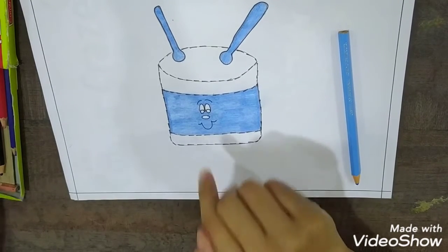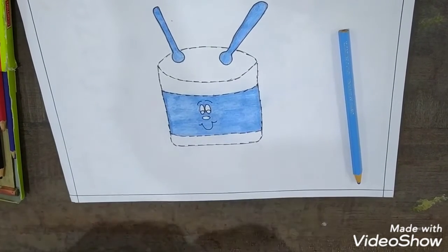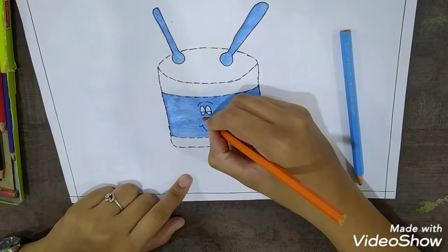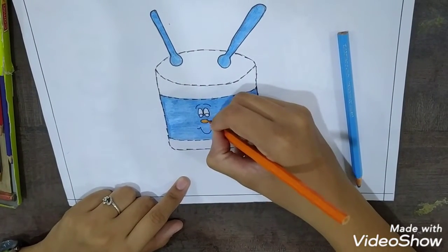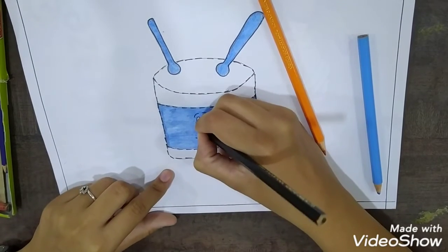Now I am going to color its nose in orange color. So you can color it in any different color also. Okay. And I am going to color its eyes in black color.